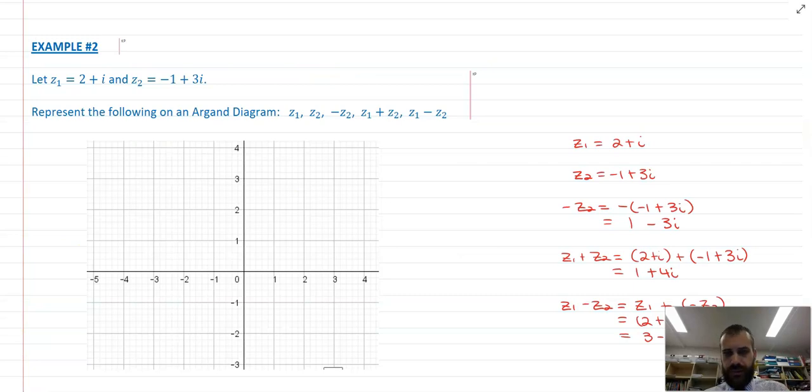Now we can look at this example here. It says let z1 equal two plus i, let z2 equal negative one plus three i, and then represent the following on an Argand diagram.